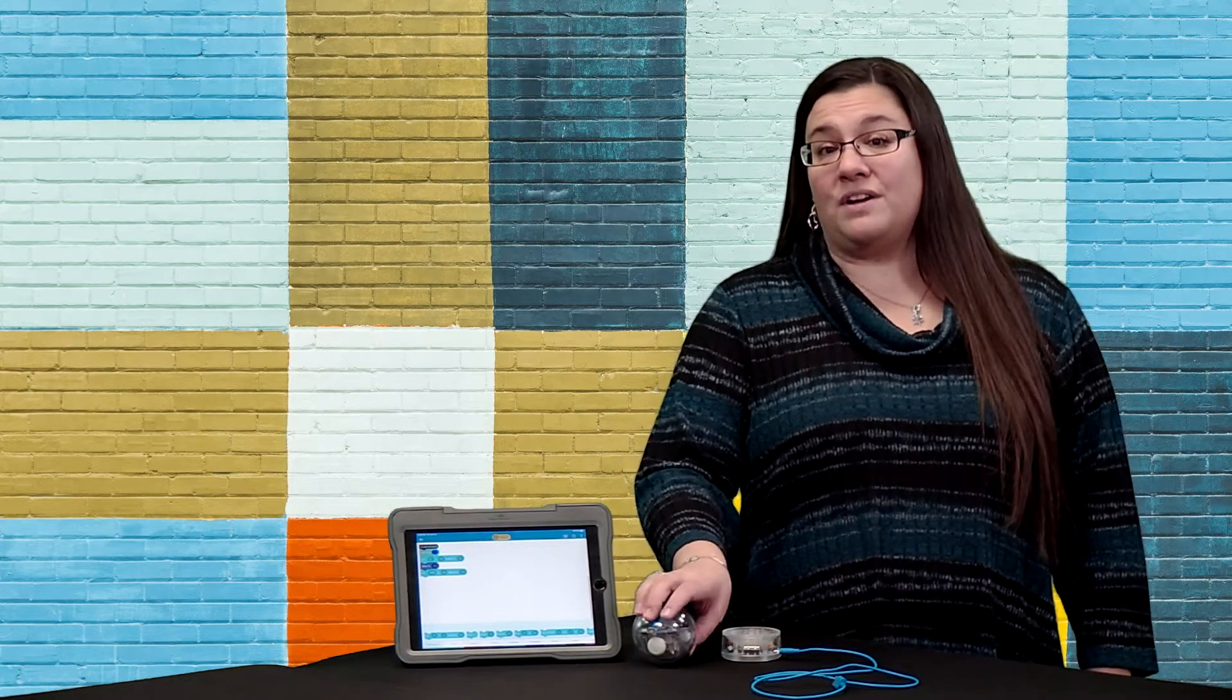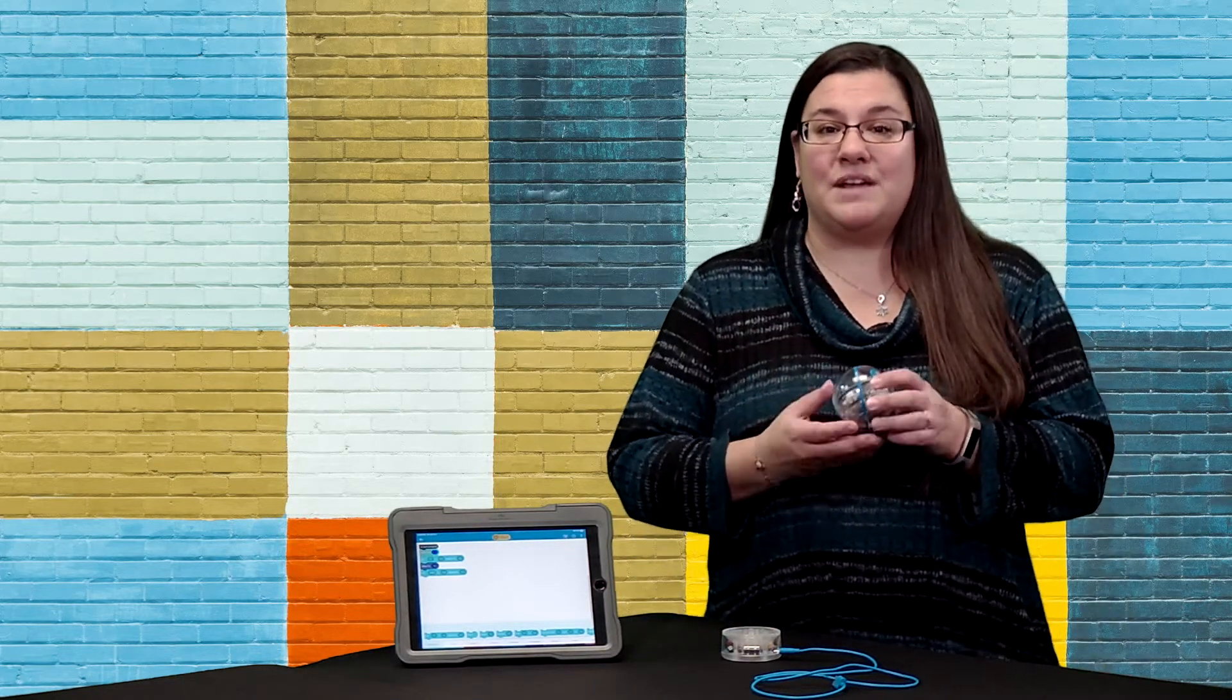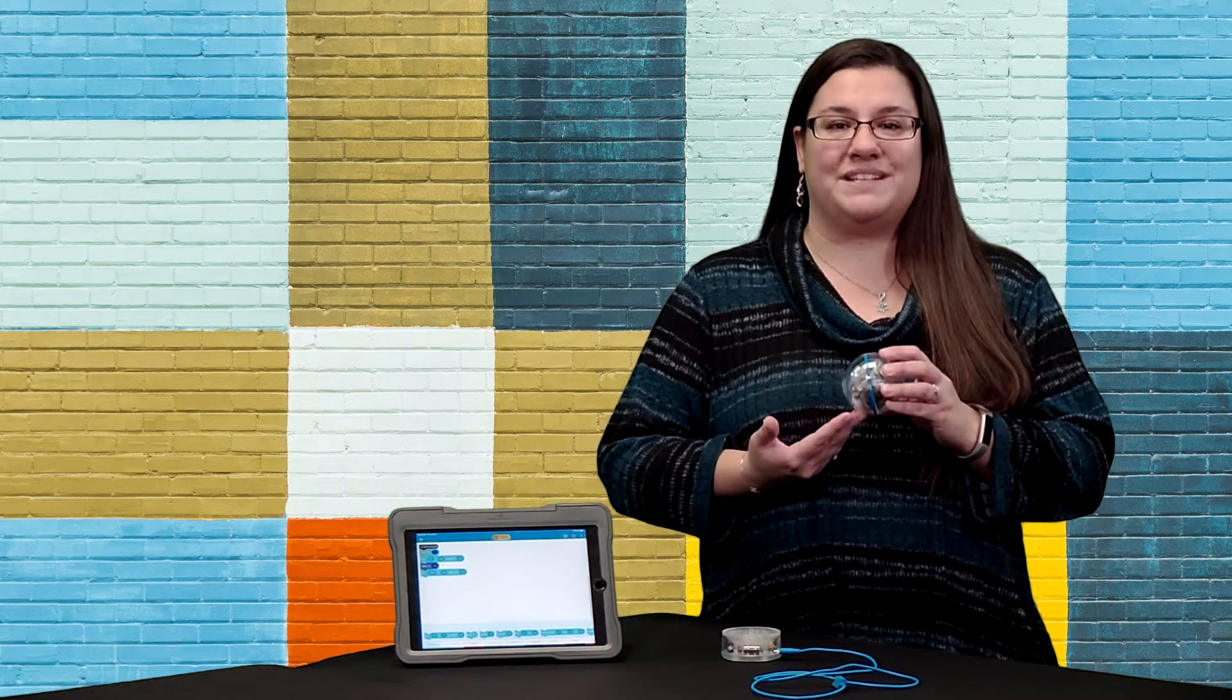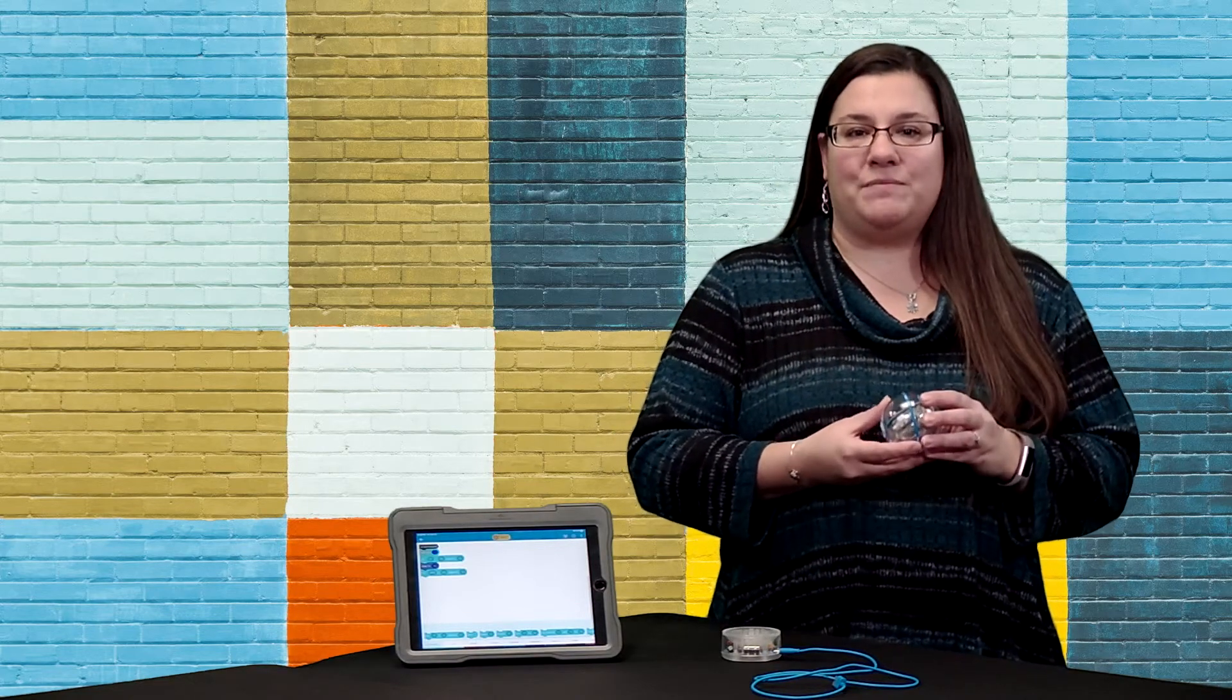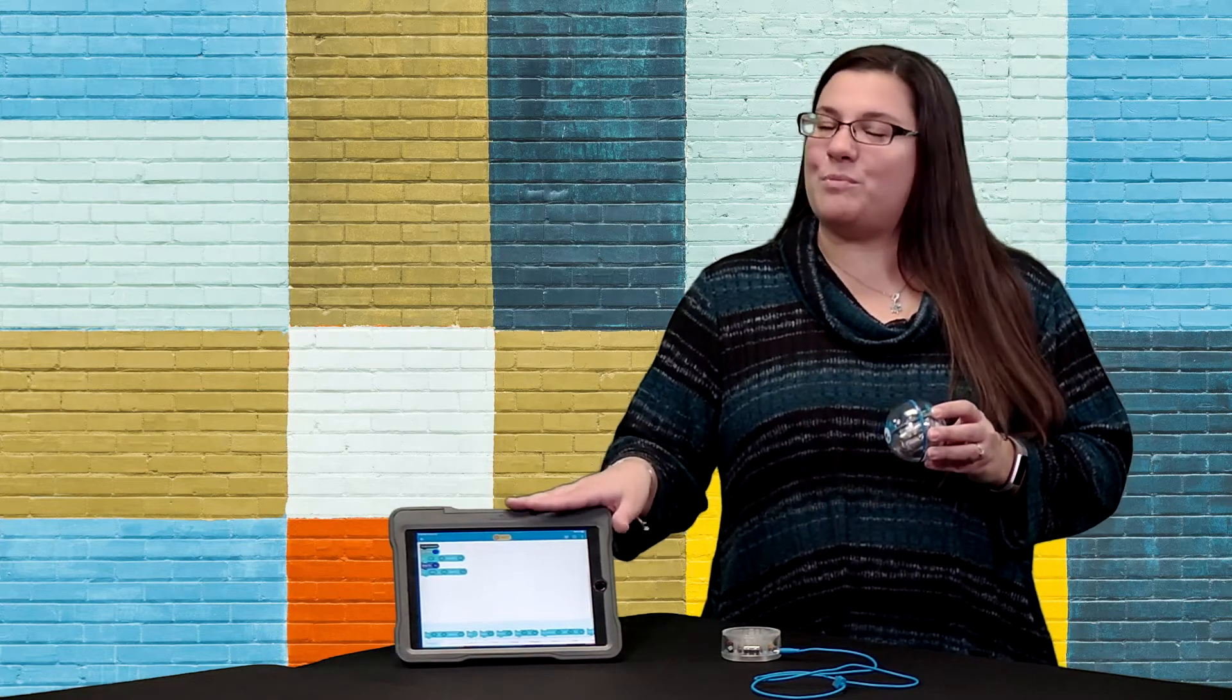Sphero also has a plethora of sensors, lights, sounds, and more for a robust programming experience. Because Sphero is sphere-shaped and doesn't necessarily have a front or a back, you must use the aim feature inside the app to orient the robot in the right direction.